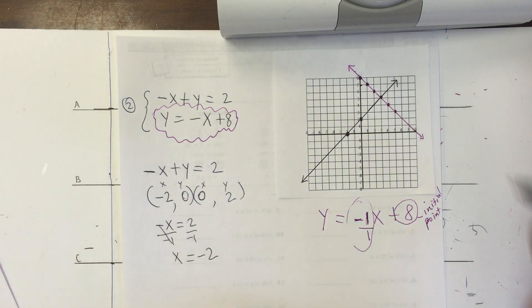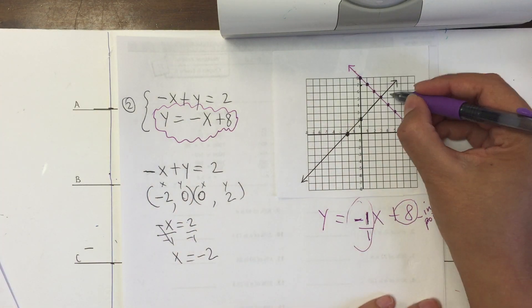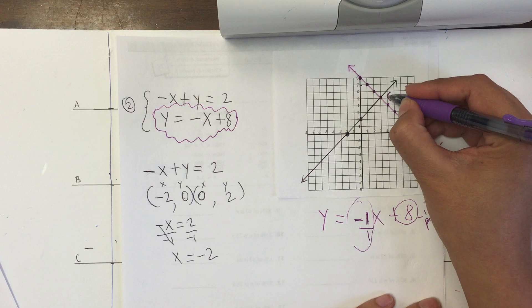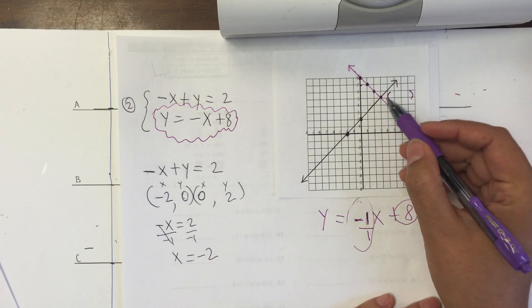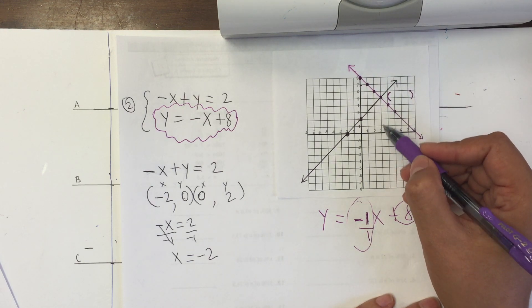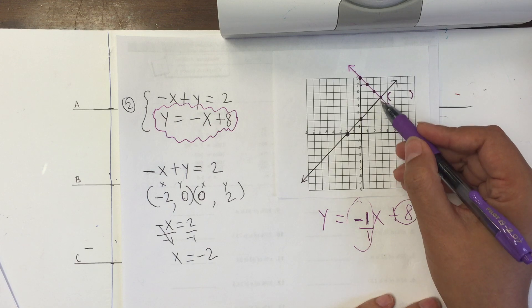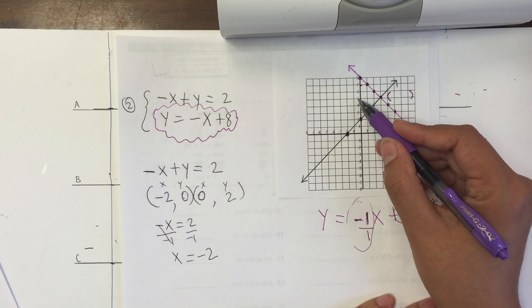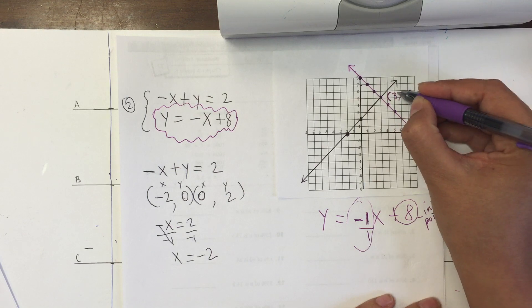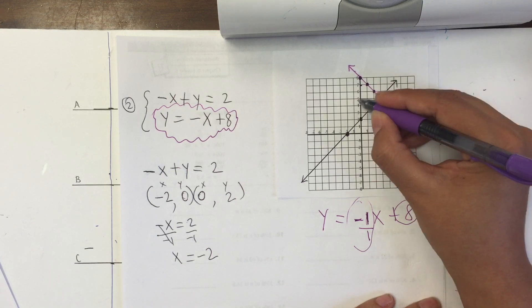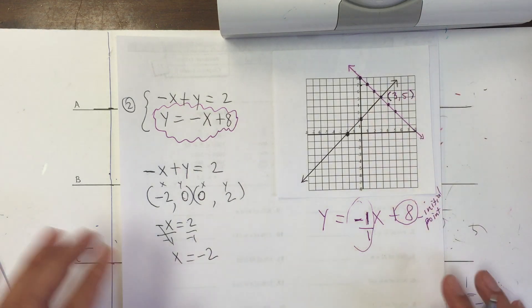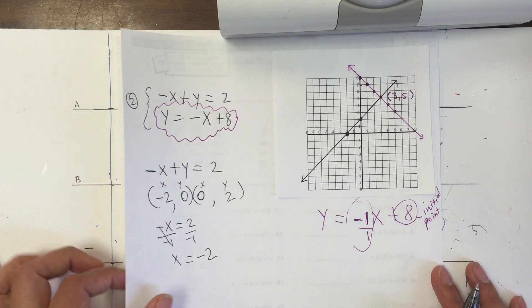That's the line. Now, what I'm looking for is the point of intersection — the point where the two lines cross. And so my x is 3 and my y is 5. So the solution is x equals 3, y equals 5. That's where the two lines cross.